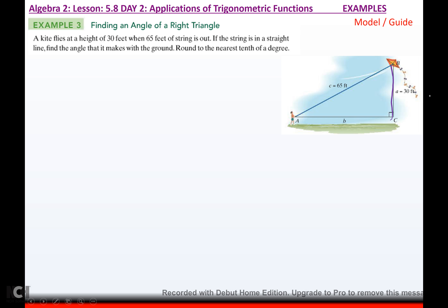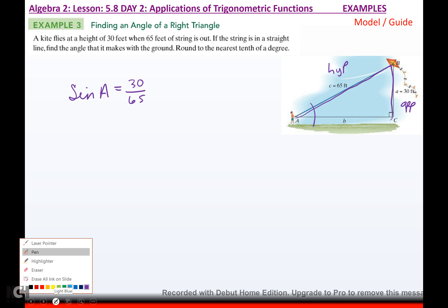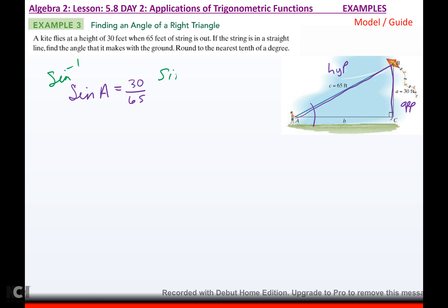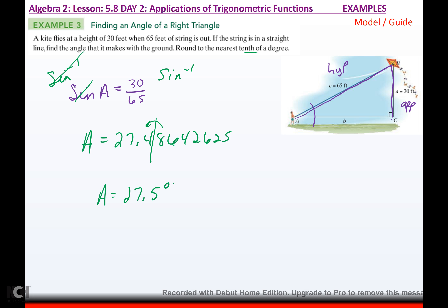A kite flies at a height of 30 feet when 65 feet of string is out. If the string is a straight line, find the angle it makes with the ground. From the angle, they give opposite (30) and hypotenuse (65), so that's a sine function. Set up sin(A) equals 30 over 65. To get A alone, use arcsin. That gives A equals 27.49 degrees, so to the nearest tenth, the angle is 27.5 degrees.